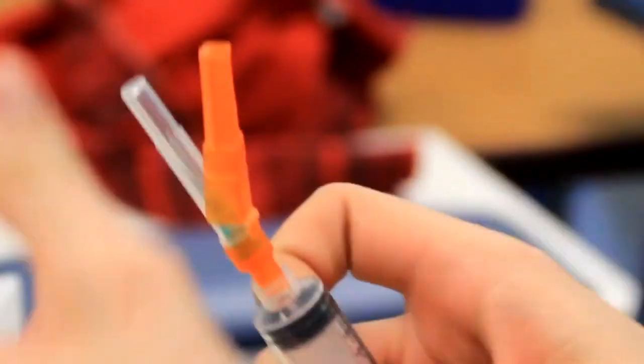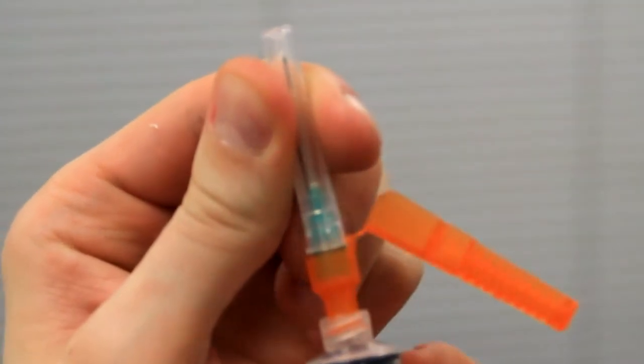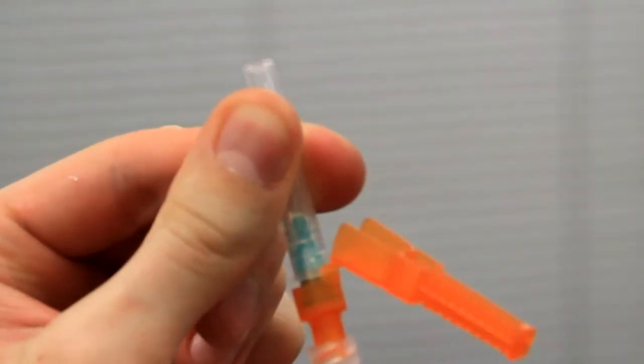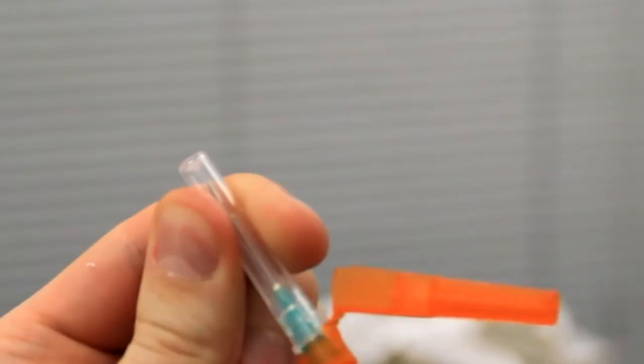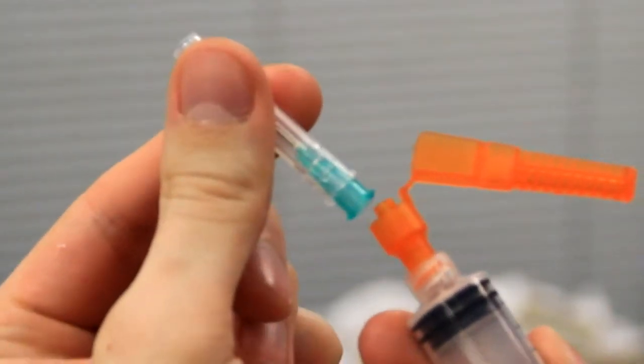Depending on the needle chosen, it can have either a luer slip or a luer lock. If your needle has a luer slip, simply spin the needle on the hub until the safety device will be out of the way with the bevel facing up.